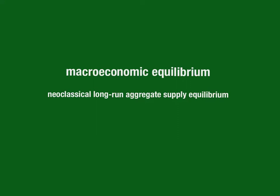This video will focus on the neoclassical long-run aggregate supply equilibrium. Before we get there, a reminder that the actual level of output and its corresponding price level in an economy are determined by the interaction between aggregate demand and aggregate supply. We've been building towards this moment throughout our studies of AD and AS, and finally we're going to put these two curves together. Simply put, the equilibrium level of national income is where aggregate demand equals aggregate supply.